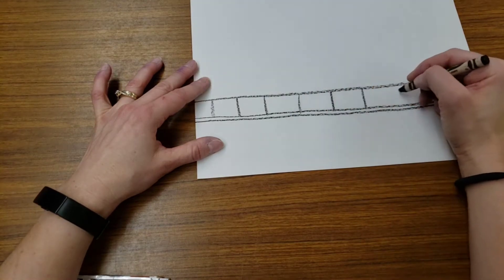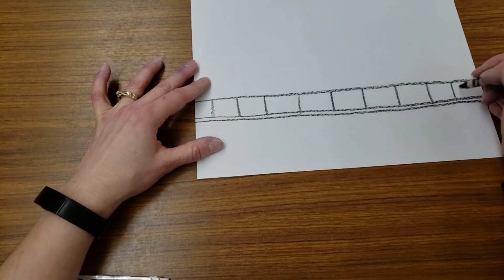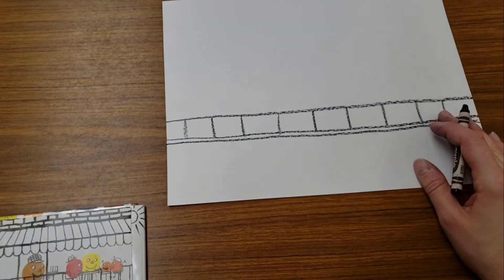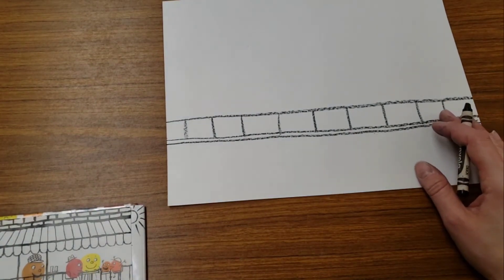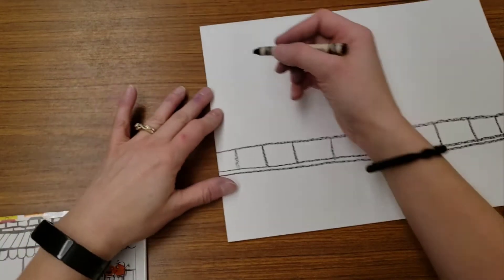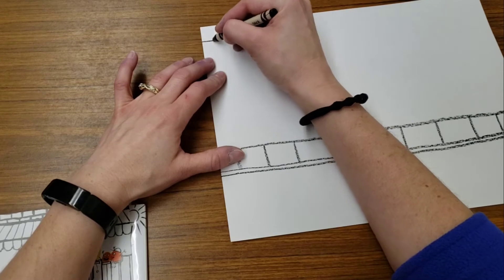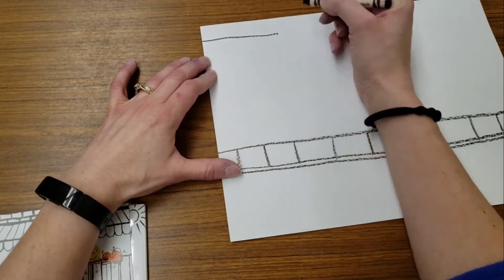Now next, we can add some simple buildings and trees. Buildings are usually rectangles or squares, so I'm going to make a horizontal line and a vertical line. There's the beginning of my first building.